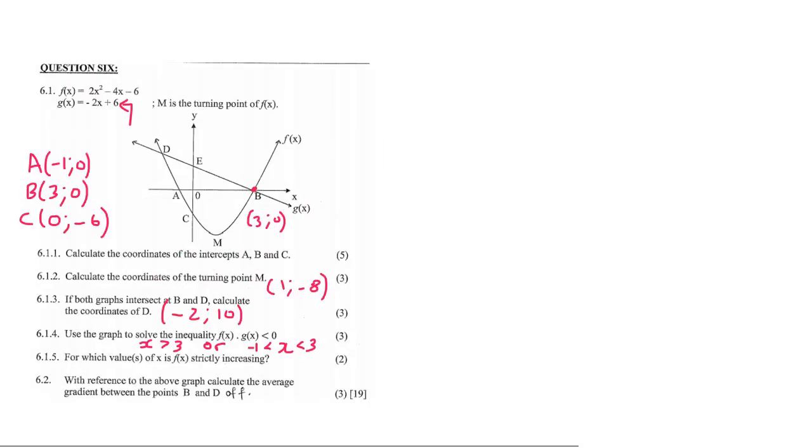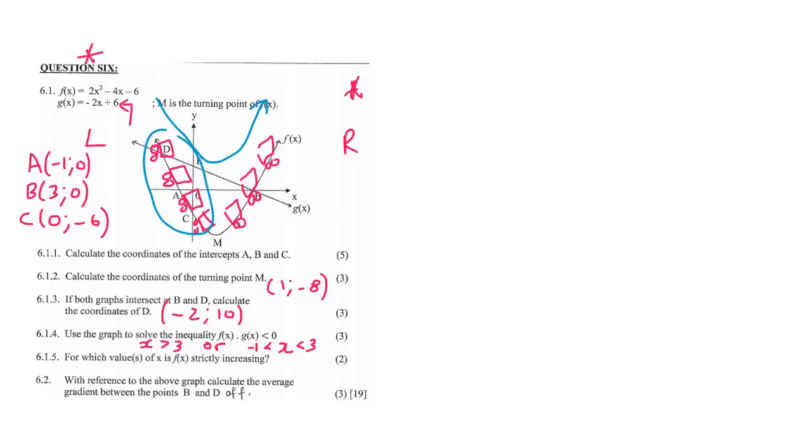For 6.1.5, when they talk about increasing and decreasing, that is where we draw a rollercoaster, and we always go from left to right. Always imagine your rollercoaster going from left to right. So let's draw ourselves a rollercoaster with wheels. Now, where is the rollercoaster going downhill? It must always go from left to right, so it must go like this. It's going downhill here, and then it's going uphill over here.